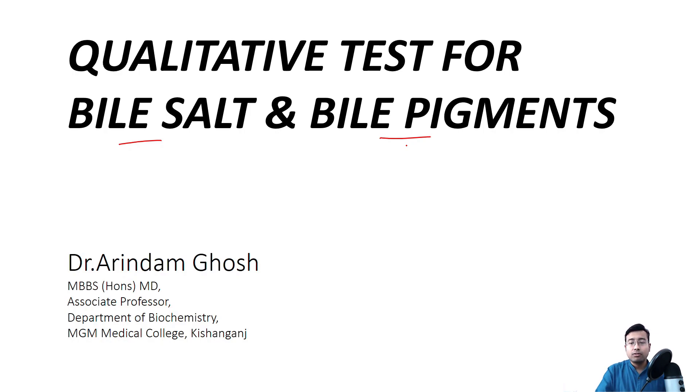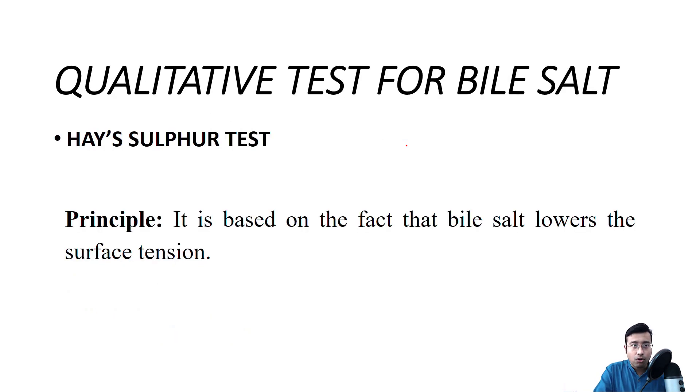So right away we'll start first with qualitative test for bile salts. The name for qualitative test of bile salt is known as Hay's Sulphur test. In many textbooks it will be also known as Hay's test. This is the simplest test of abnormal constituents of urine.